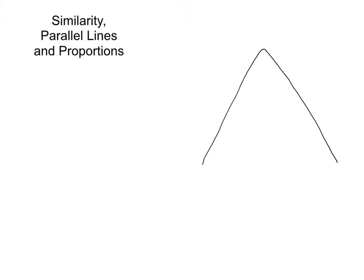This video is going to look at similarity, parallel lines, and proportions that can be found therein. Let's start with a triangle. Say we have this triangle and another triangle was created within it, and the far side and this side are parallel. Let's label them so we can talk about the triangles a little bit better.